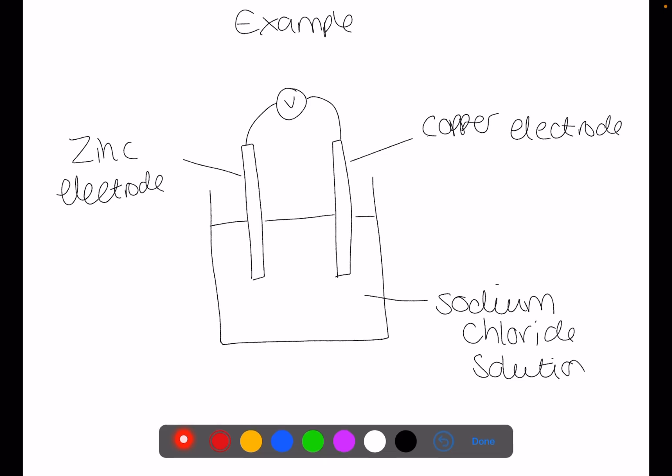In this cell the electrons will travel from the zinc to the copper. This is because the electrons will travel from the more reactive metal to the less reactive metal. The larger the difference in reactivity the larger the voltage that is produced.